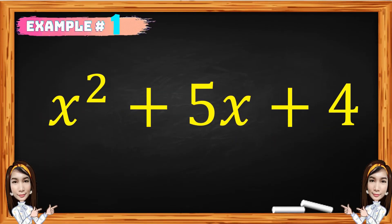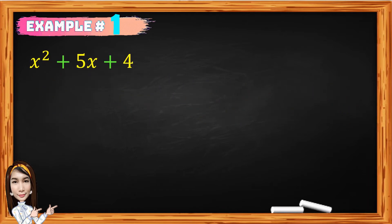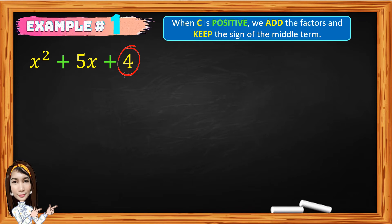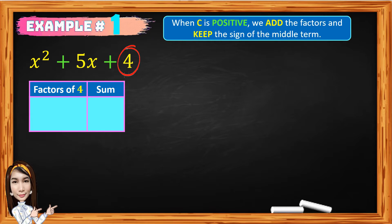Let's have the first given: x squared plus 5x plus 4. When c is positive, we add the factors and keep the sign of the middle term. 4 is the product, so we need to get all the factors of 4. Notice that the middle term is positive, therefore all the factors are both positive. The factors of 4 are 1 times 4 and 2 times 2. Adding: 1 plus 4 equals 5, and 2 plus 2 equals 4. The sum refers to the coefficient of the middle term, which is 5. So the factors whose sum is 5 are 1 and 4.